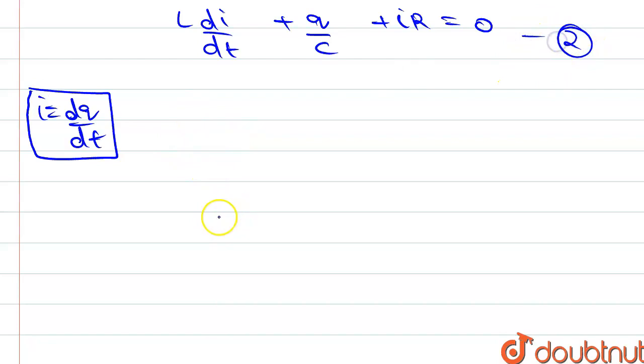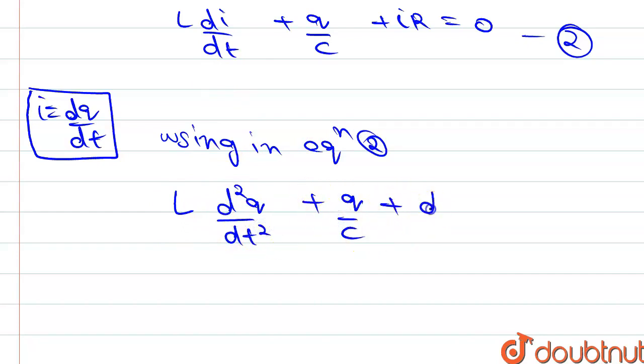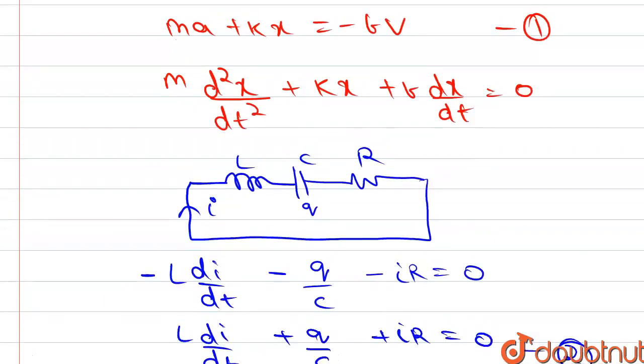So we use this in the above equation 2. Using this in equation 2: L times di/dt equals L times d²q/dt² plus q/c plus dq/dt times R equals zero. On comparing this equation with the upper equation,